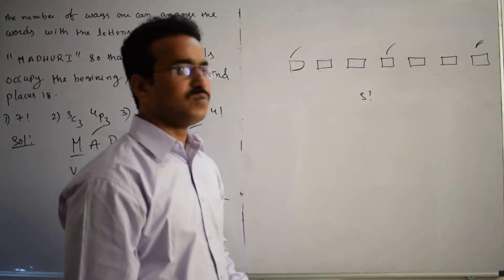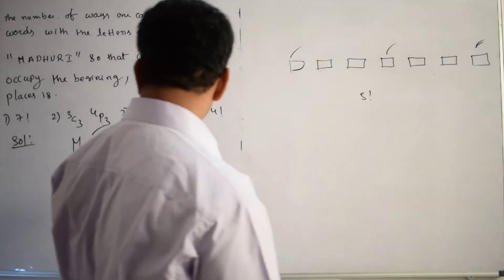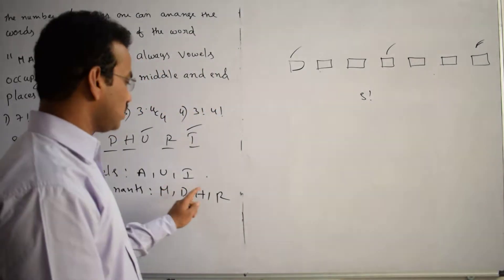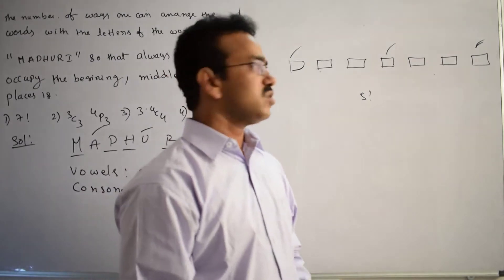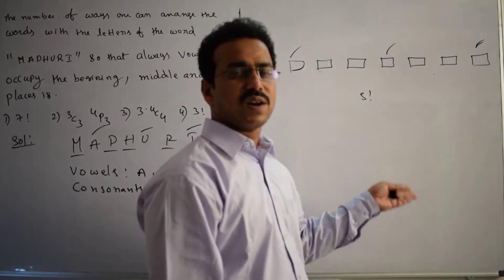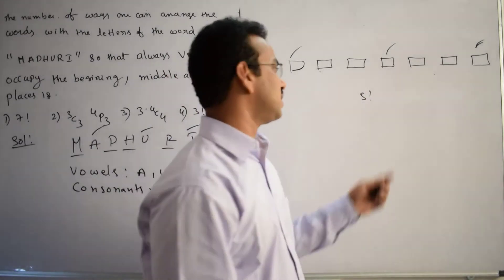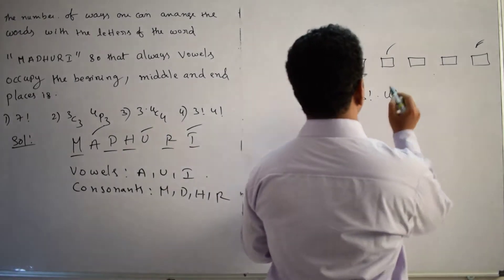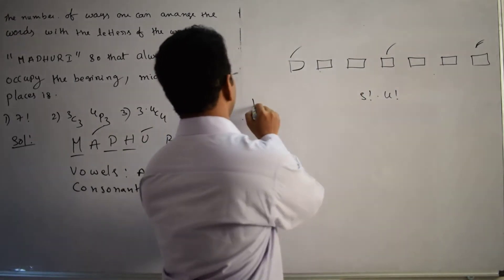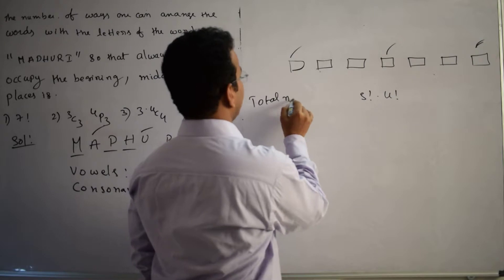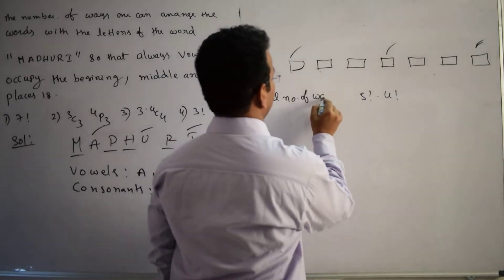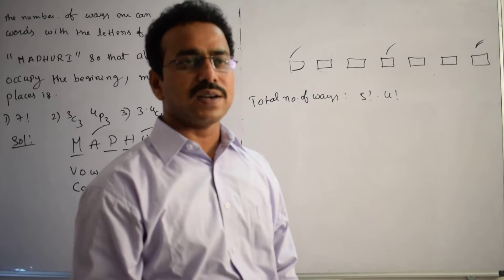How many boxes remain? Four boxes remain. How many consonants are there? Four consonants: 1, 2, 3, 4. So in 4 boxes, 4 consonants can be arranged in 4 factorial ways. Therefore, the total number of ways equals 3 factorial times 4 factorial.